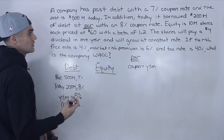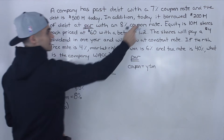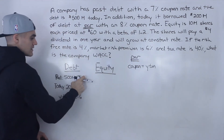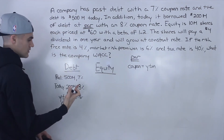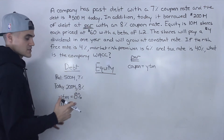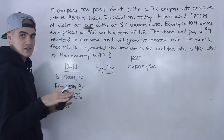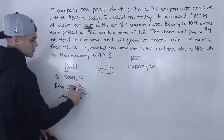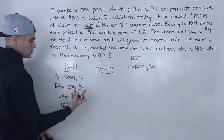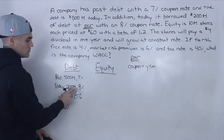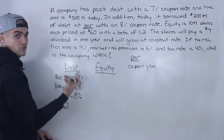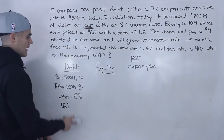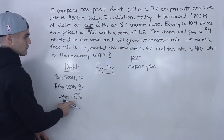And why is that important? Because the yield to maturity is the same as the cost of debt, and that is going to be used in the calculation for the weighted average cost of capital. So that's the first trick in this question — realizing that the 7% coupon rate on the past debt is irrelevant. What matters is the cost of debt today, which is 8%, because they issued new debt at par for an 8% coupon rate.